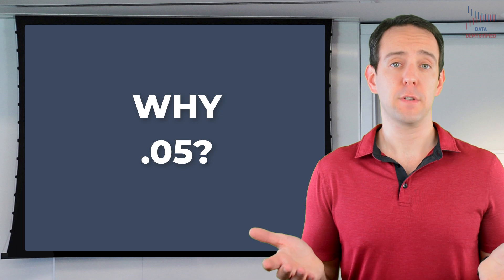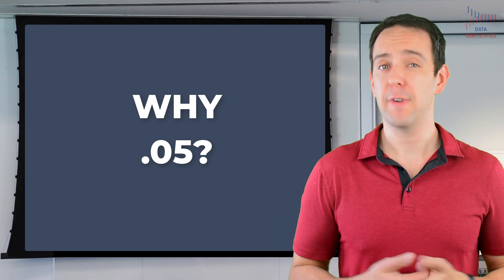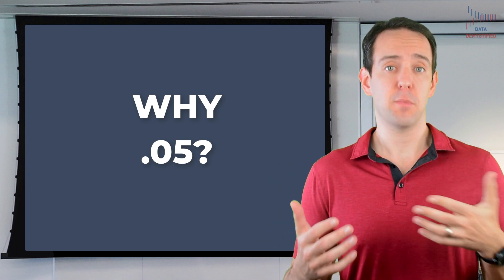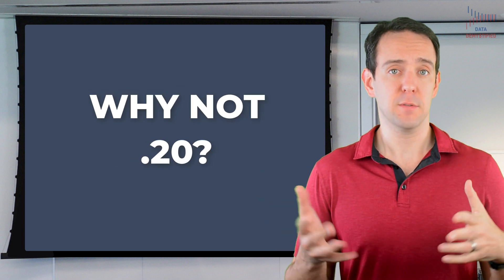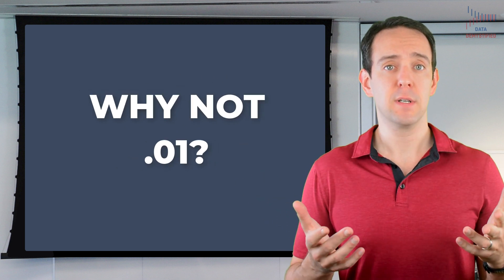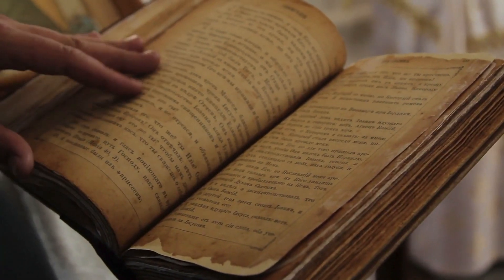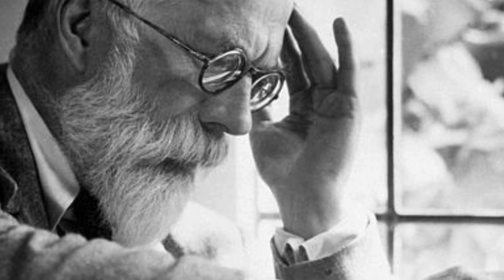Which brings us to the final point: why 0.05? Why is the cutoff for statistical significance 0.05 and not 0.20 or 0.01? The answer is actually simple — it's totally arbitrary. Someone at some point in history, probably a man named Ronald Fisher back in the early 20th century, decided that 5% was the value, and we've stuck with it ever since. There's really no good reason for 5% to be the cutoff. It's just a convention.